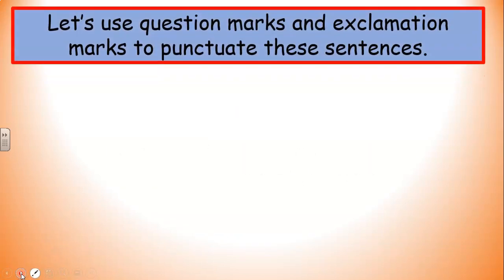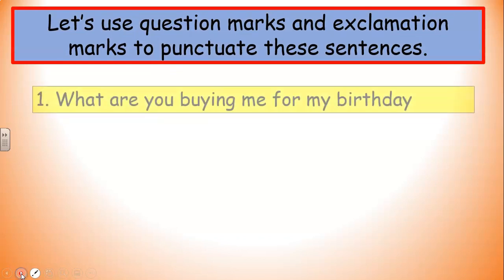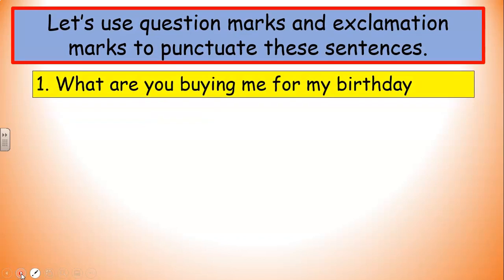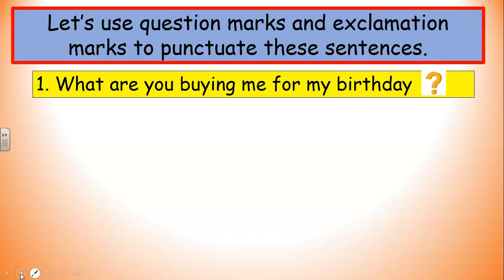So let's use question marks and exclamation marks to punctuate these sentences. Here's the first example — there's our question word at the beginning: 'What are you buying me for my birthday?' I bet you ask that of your parents when it's close to your birthday. I know I do — I like to try and figure out what I'm getting. And it's a question, so it gets a question mark.